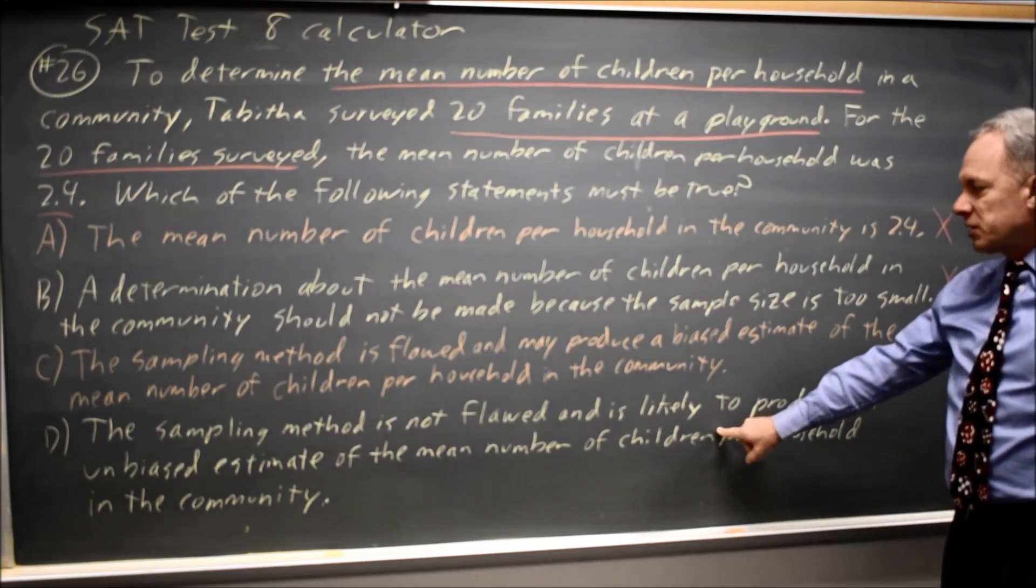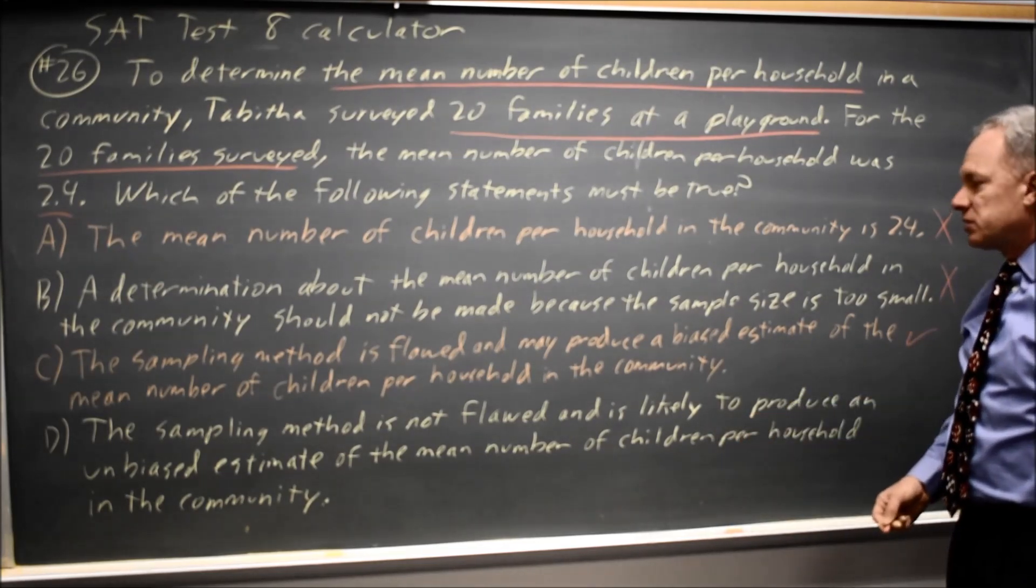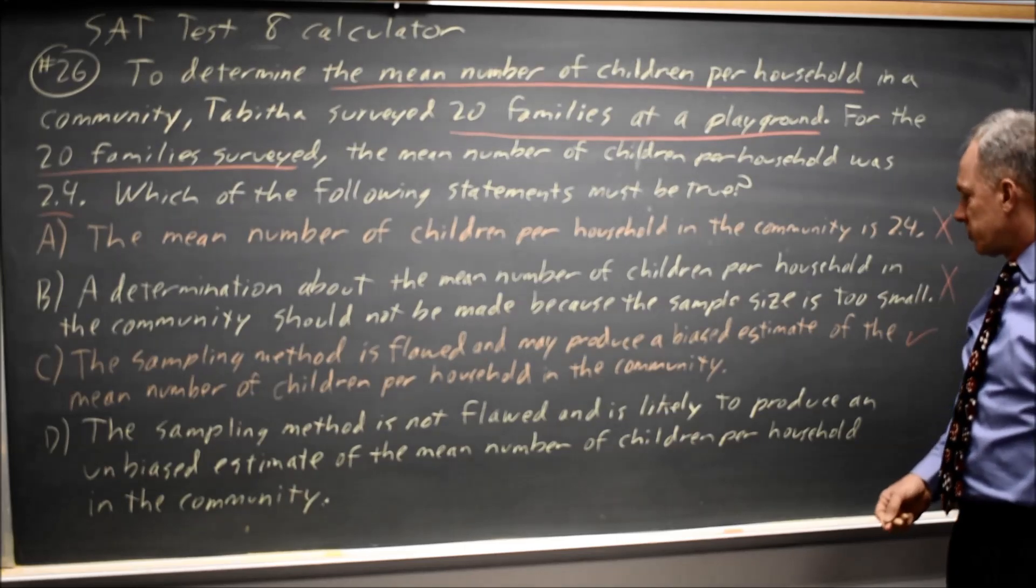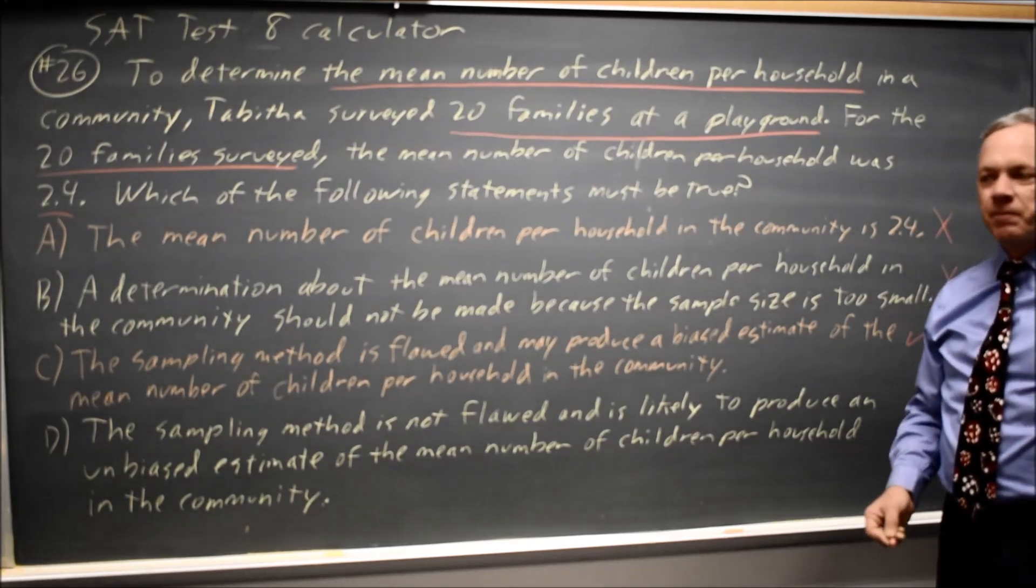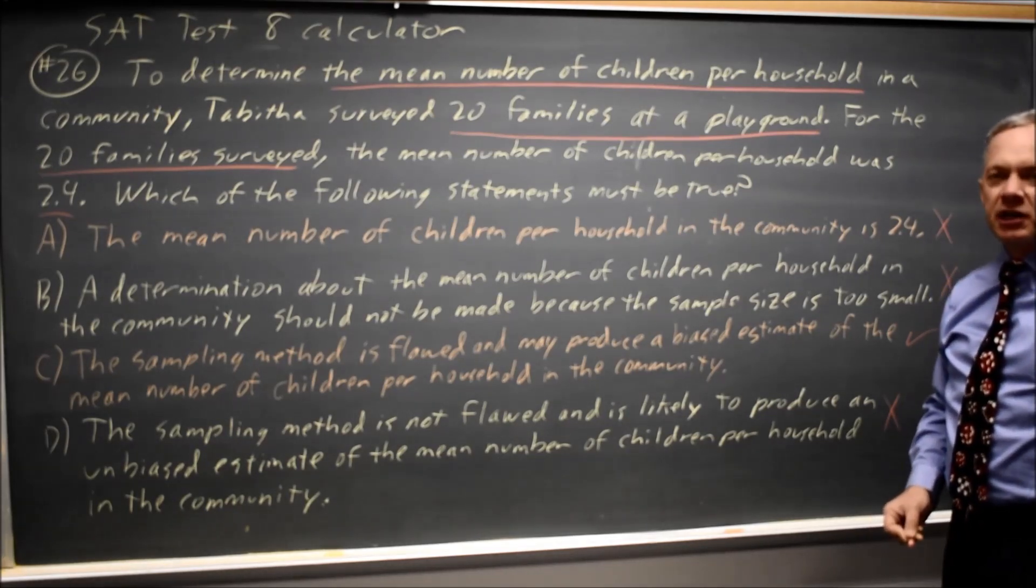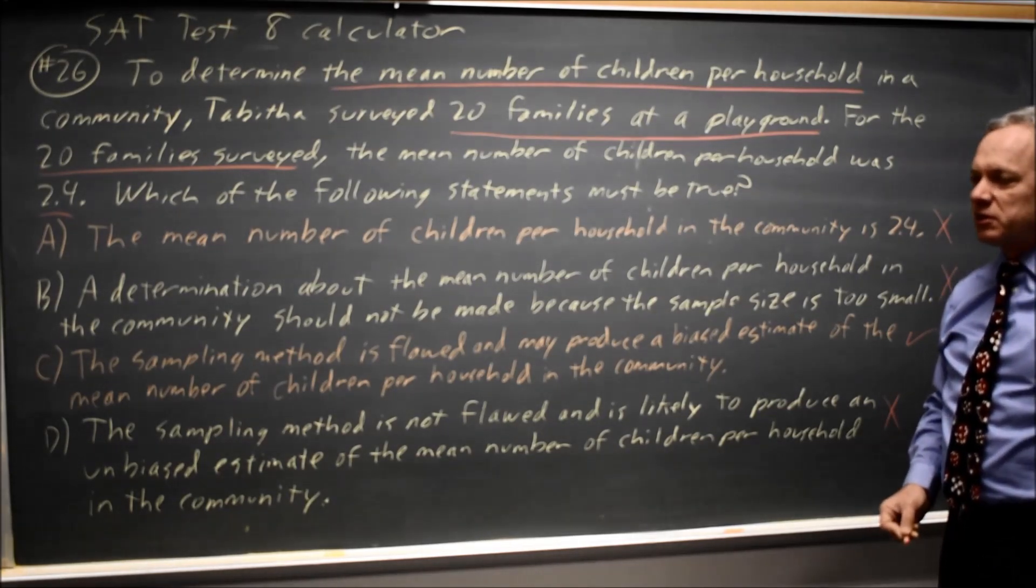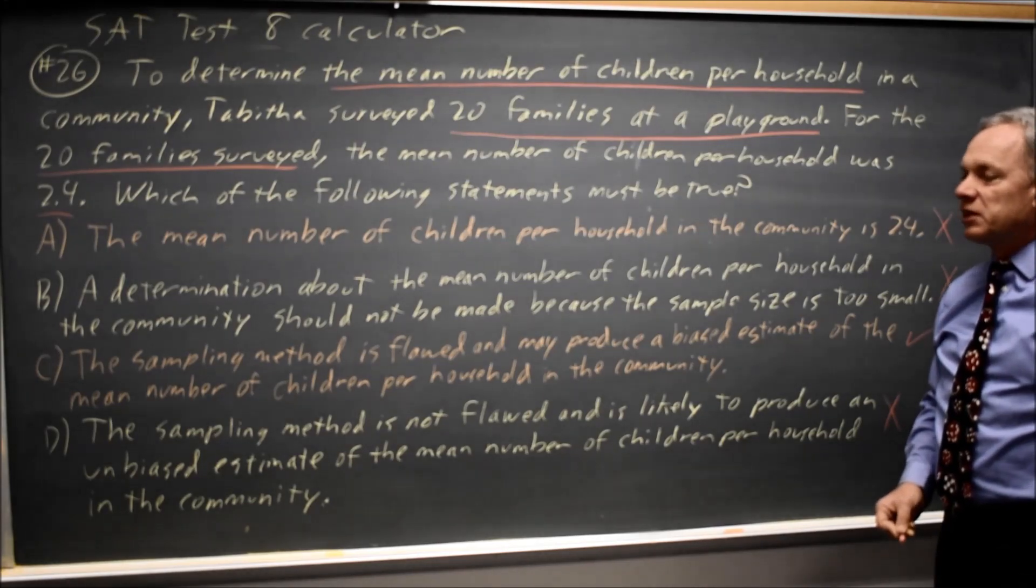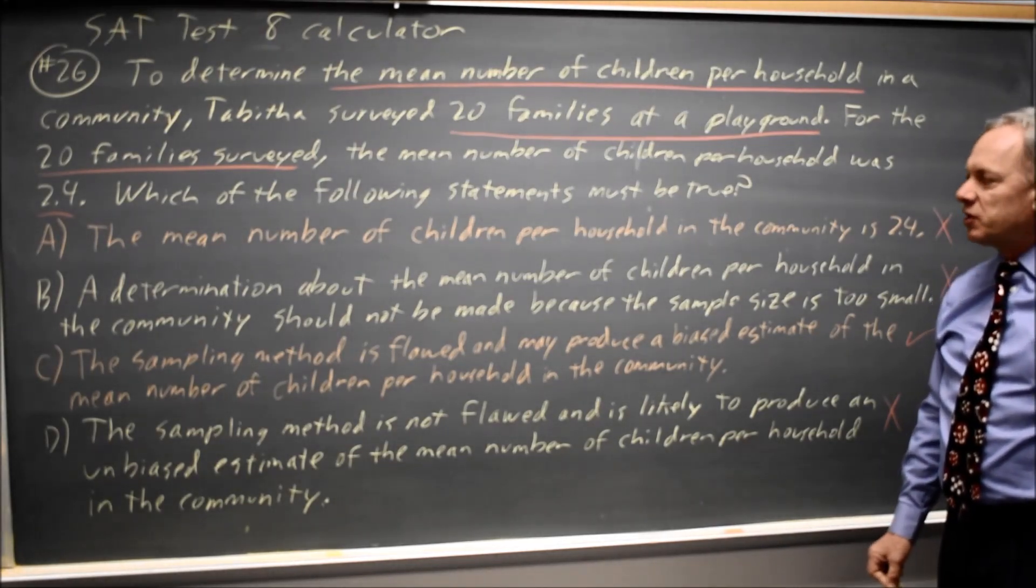Choice D: the sampling method is not flawed and is likely to produce an unbiased estimate of the mean number of children per household in the community. We just rejected that choice because we're sampling for number of children at a playground where you expect more children, or certainly at least a non-representative number of children.